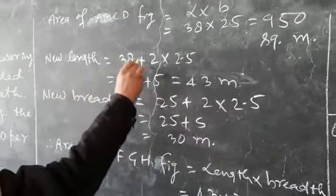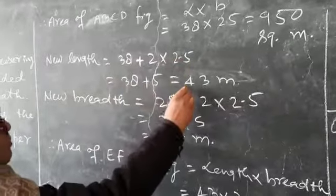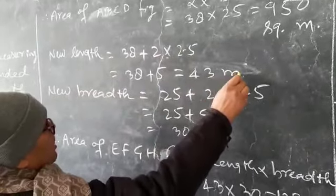Now, new length is equal to 38 plus 2 into 2.5. Therefore, 38 plus 5 which will be equal to 43 meter.